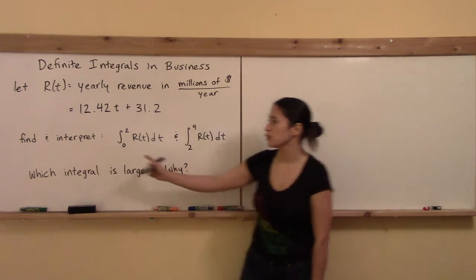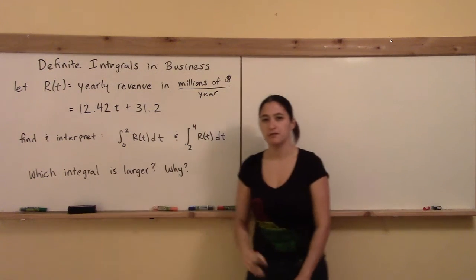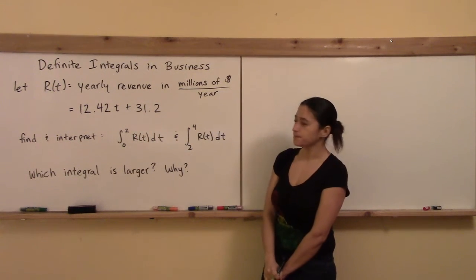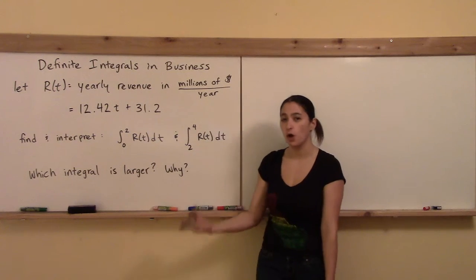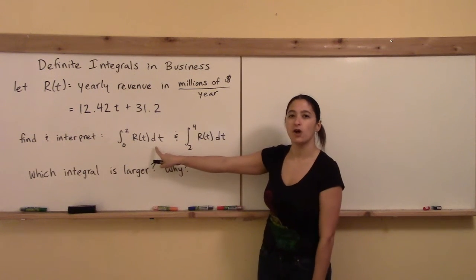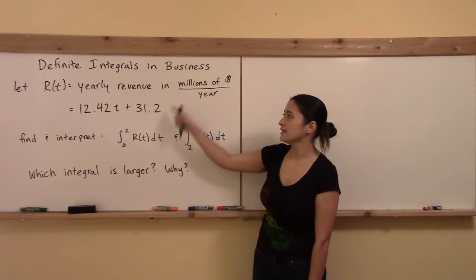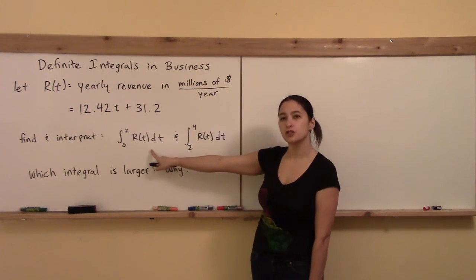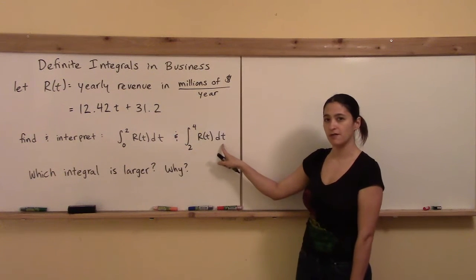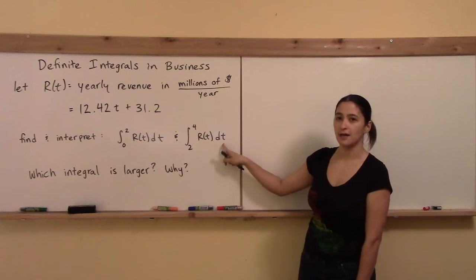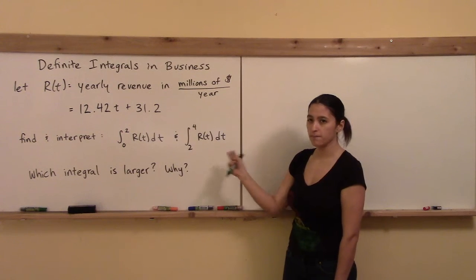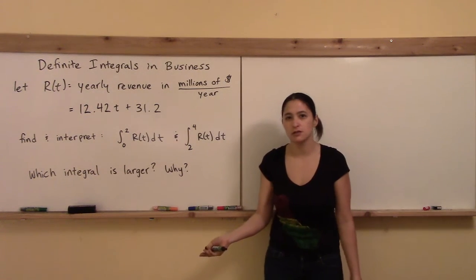Let's interpret both of these definite integrals before we find them. The integral from 0 to 2 of R(t) dt is the total amount of revenue made from time equals 0 to time equals 2 — the total revenue the company will make in the first two years. The integral from 2 to 4 is the total revenue made in the next two years, from year 2 to year 4.